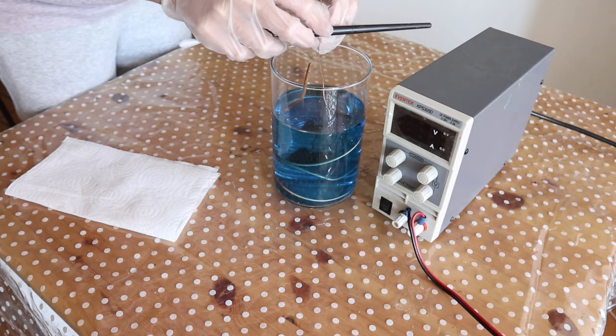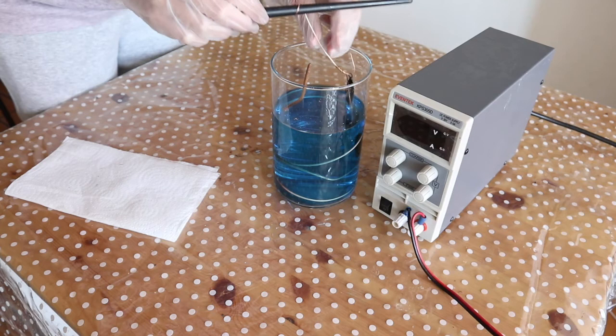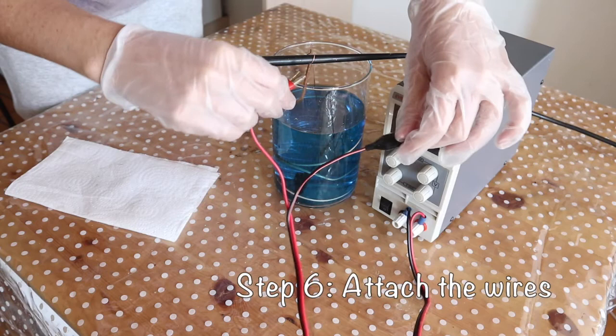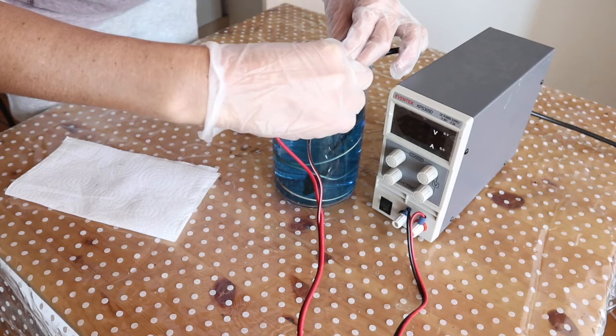Attach the hanging wire to your bus bar. Next, attach the red wire to your copper coil and the black wire to your hanging wire. Turn on your rectifier.